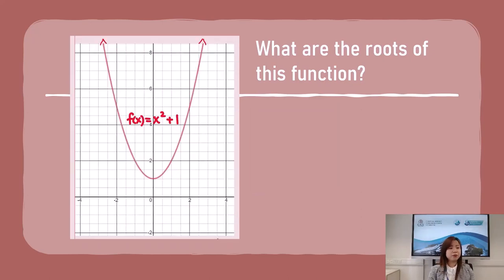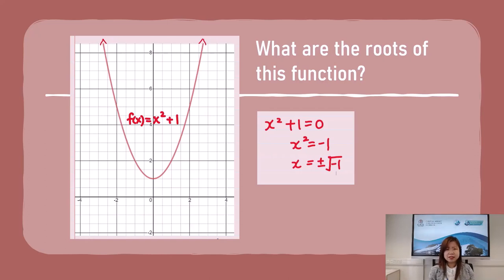For this function, f(x) = x² + 1, let's solve this algebraically. We set this equal to 0, put the 1 over making it -1. And to solve for x, we square root both sides, giving two answers: x = ±√-1. Wait a minute, it is not possible. If you put this in the calculator, the calculator would just say no real numbers. You can't simply square root a negative 1.